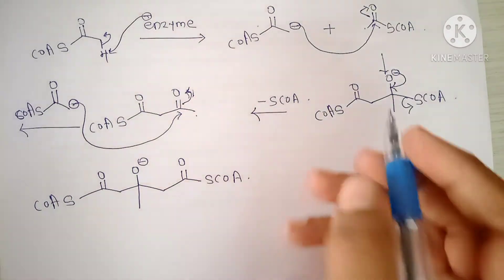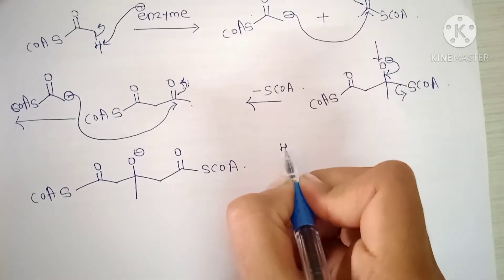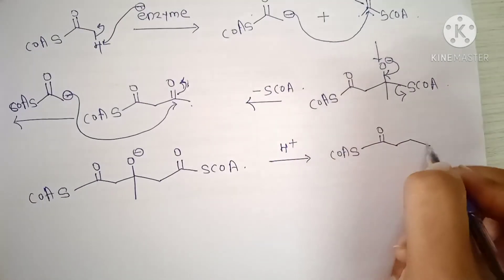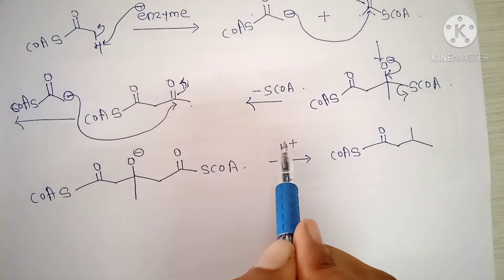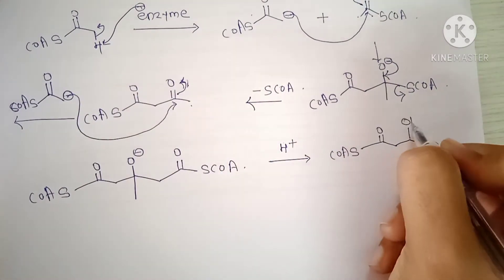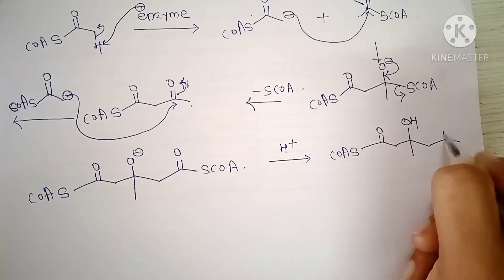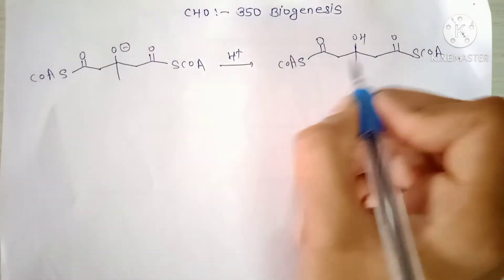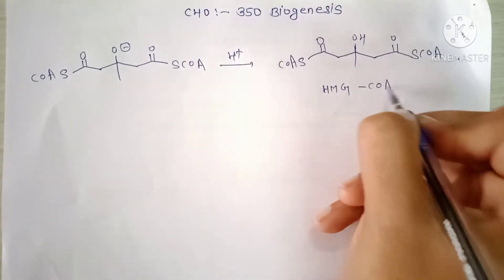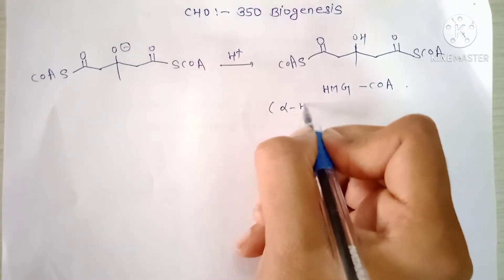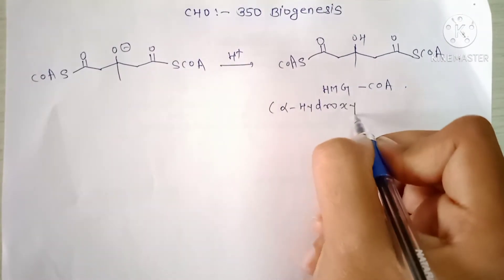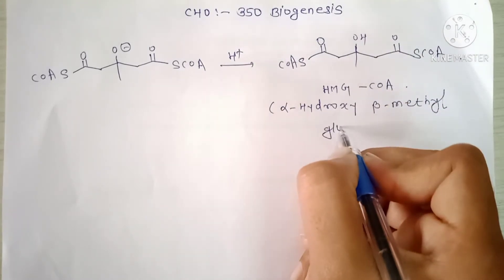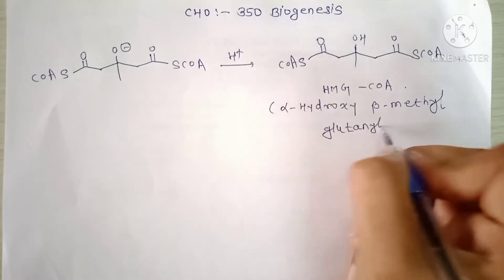The next step is protonation: H⁺ is added, and the negative charge attacks H⁺ to form OH, giving S-CoA–C(=O)–CH2–OH–CH3–CH2–C(=O)–S-CoA. This is the structure of HMG-CoA, meaning alpha-hydroxy-beta-methylglutaryl coenzyme A.